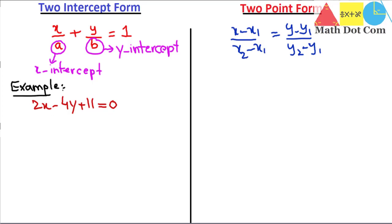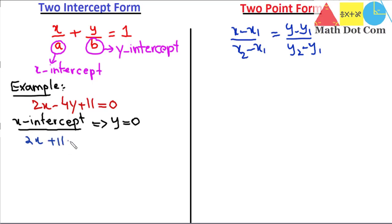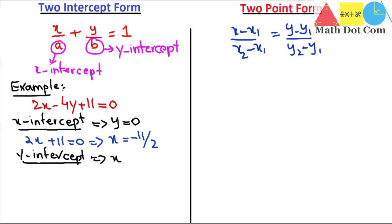First we will find the x-intercept. To find the x-intercept, we put y equals 0 in the given equation. The 4y term becomes 0, so we get 2x plus 11 equals 0, giving x equals minus 11 by 2. This is the x-intercept. Then for the y-intercept, we put x equals 0 in the given equation. The 2x term becomes 0, giving minus 4y plus 11 equals 0, so y equals 11 by 4. We have now found both the x and y intercepts.